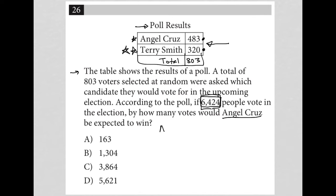For Angel Cruz, we know that out of the 803 voters, Angel Cruz received 483. So 483 out of 803. And then X represents how many votes Angel Cruz would receive out of 6,424.